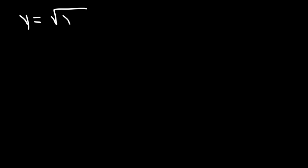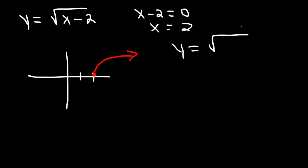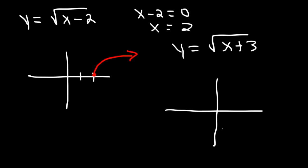What about the square root of x minus 2? In this case, it's going to shift to the right 2 units. You can set the inside equal to 0 and solve for x — it starts 2 units to the right. Likewise, the square root of x plus 3 shifts the graph 3 units to the left, and it opens towards the right.